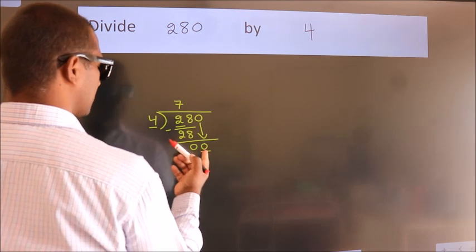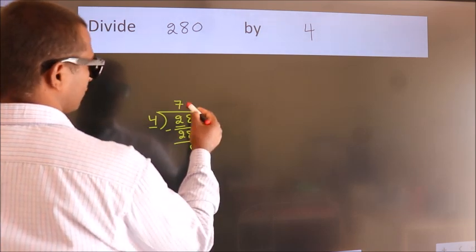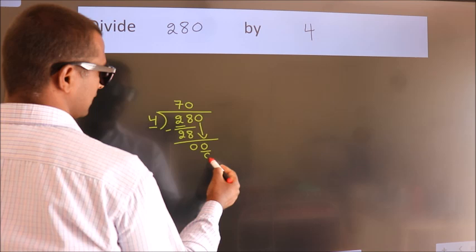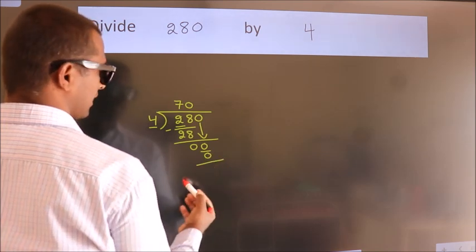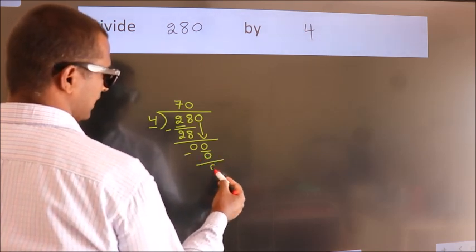When do we get 0? In 4 table. 4 times 0, 0. Now we subtract. We get 0.